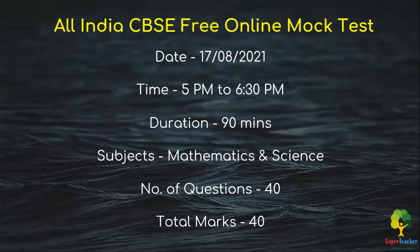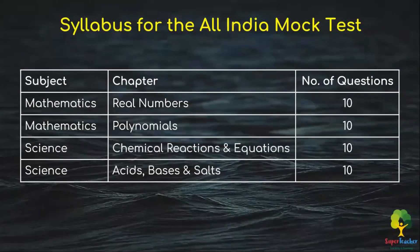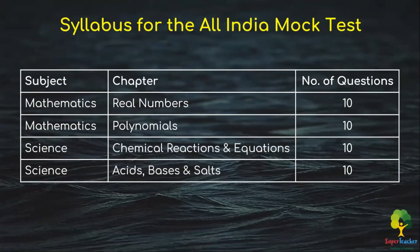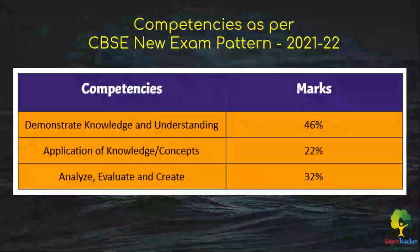Regarding the syllabus, from Mathematics you have the chapters Real Numbers and Polynomials. From each chapter you can expect 10 questions — so 10 questions from Real Numbers for 10 marks, and 10 questions from Polynomials for 10 marks. From Science, you have Chemical Reactions and Equations, and Acids, Bases and Salts — again 10 questions for 10 marks from each chapter.